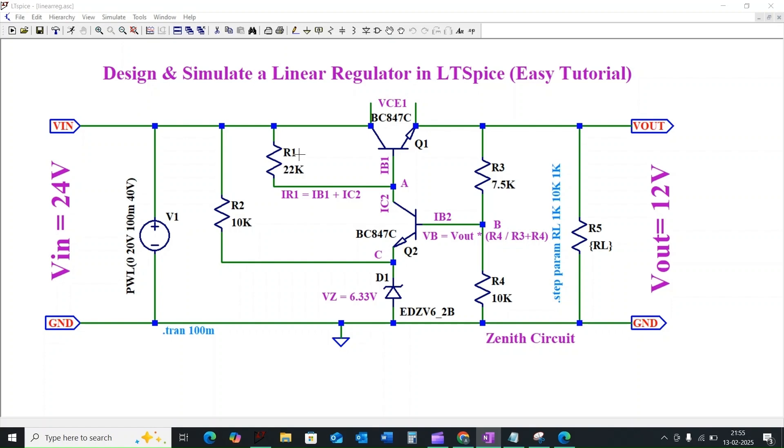Here resistor R1 drives the transistor Q1, so the current across resistor R1 will be IR1, which is equal to IB1 and IC2. Here IB1 is the base current for transistor Q1 and IC2 will be the collector current for transistor Q2.